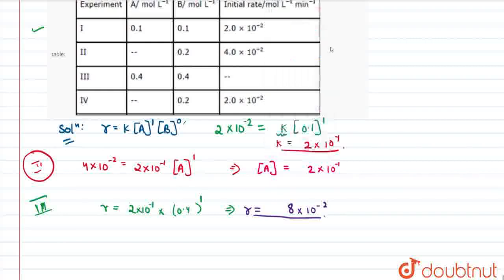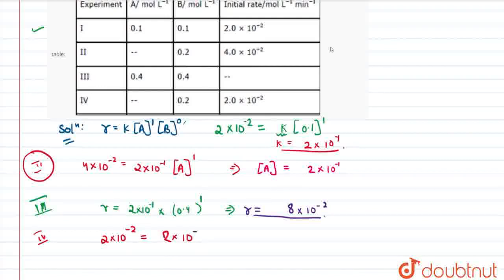Moving on to the last part — the fourth row of the table — we again have to calculate the concentration of A. So 2×10⁻² equals K, which is 2×10⁻¹, into the concentration of A. This implies that the concentration of A will be 10⁻¹ molar.